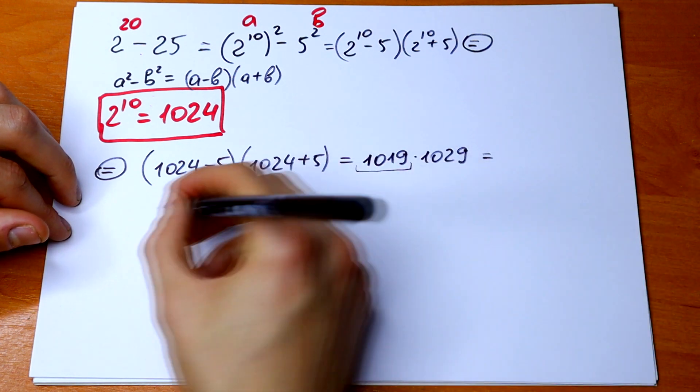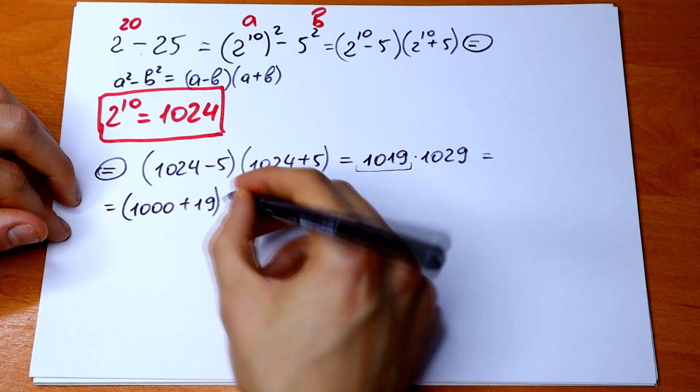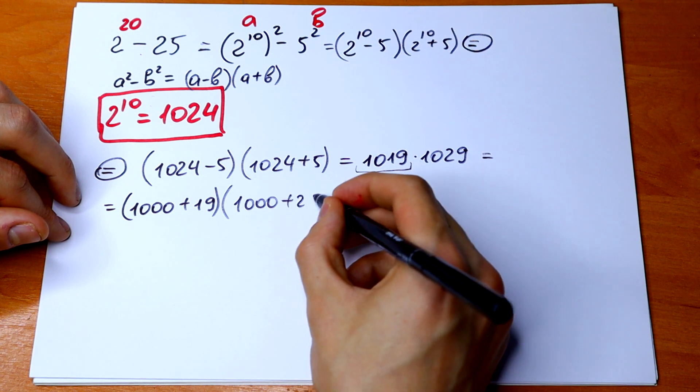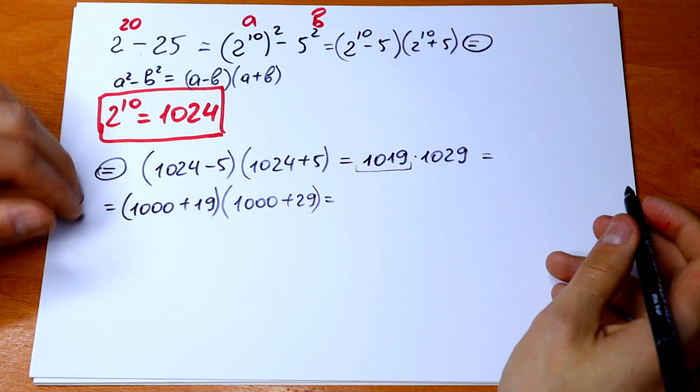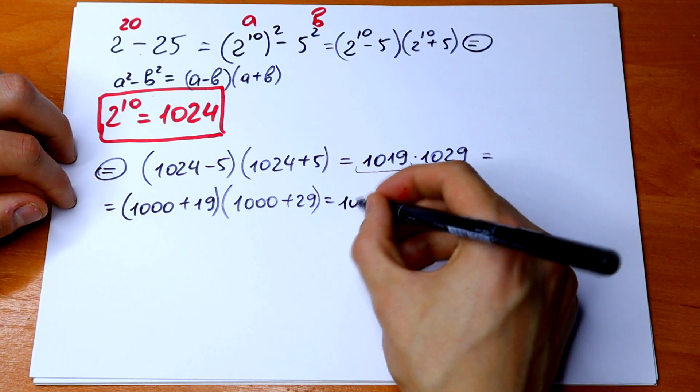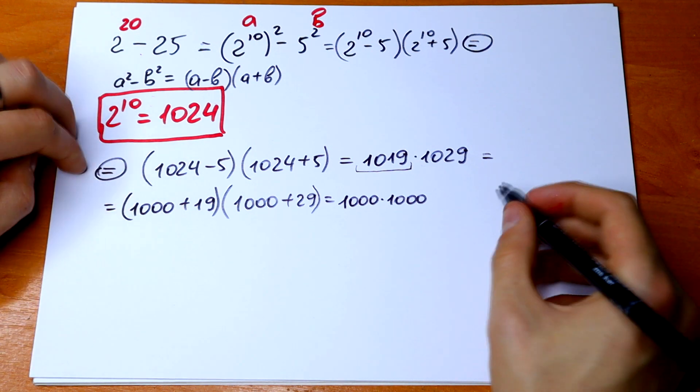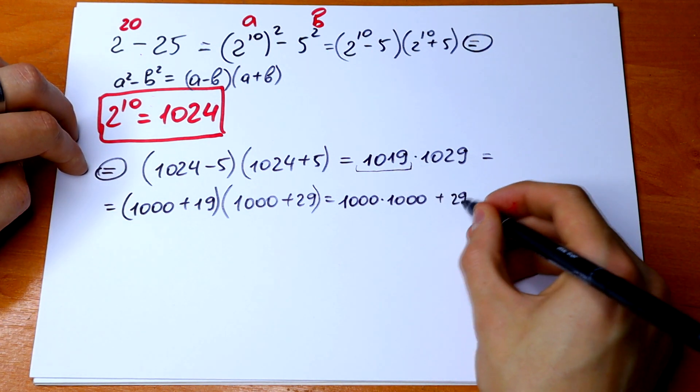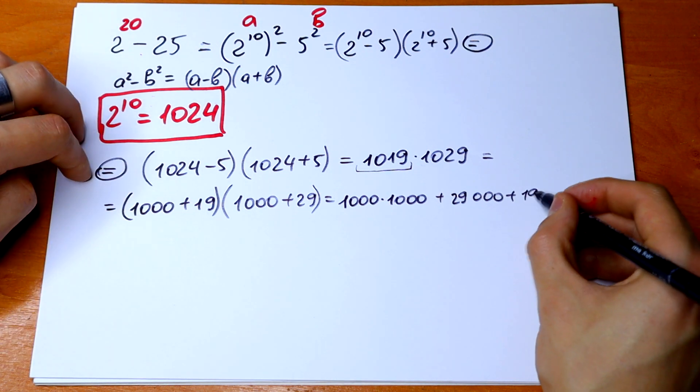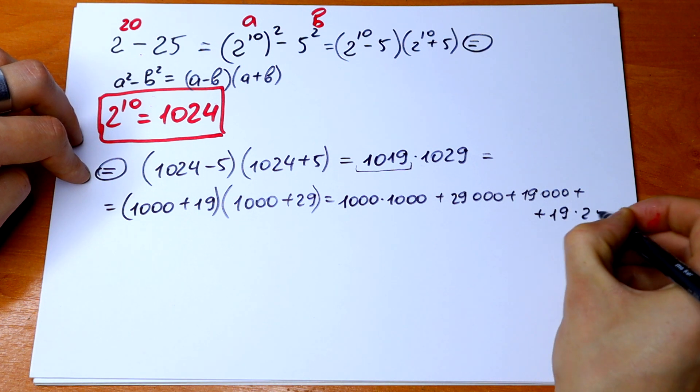It will be equal to 1000 plus 19 times 1000 plus 29. So let's multiply these parentheses. We will have 1000 times 1000 plus 29,000 plus 19,000 and plus 19 times 29.